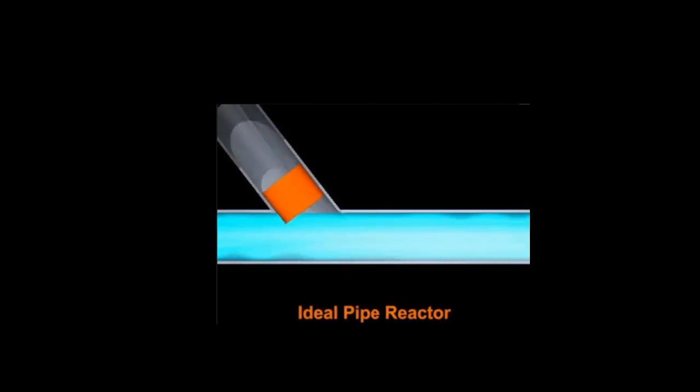In an ideal pipe reactor, we have the condition of plug flow. Plug flow means there is no back mixing of the injected plug in the pipe.